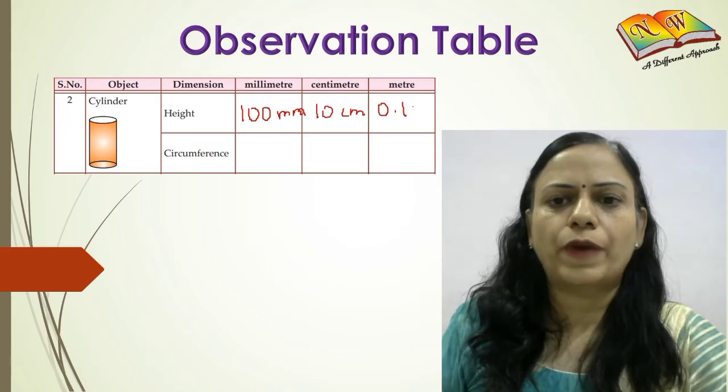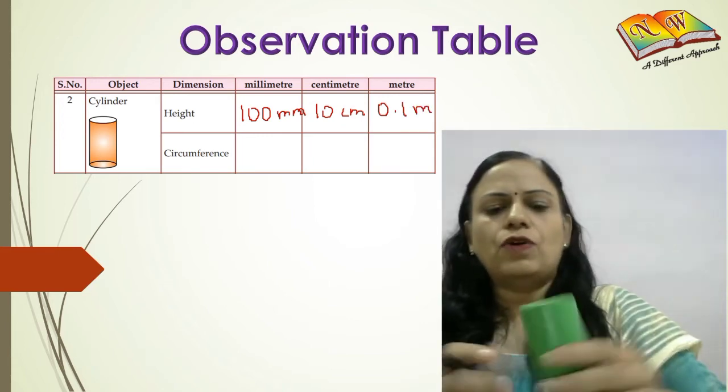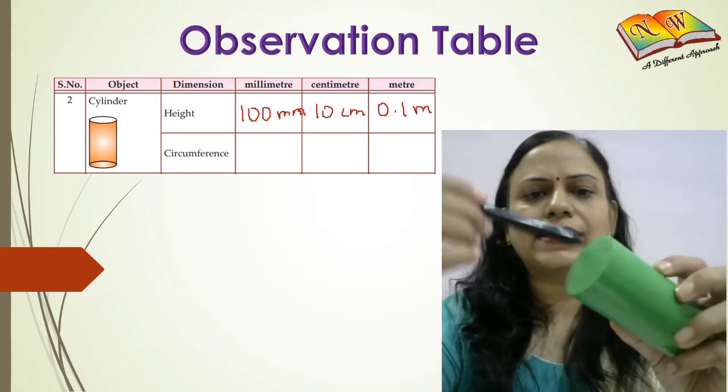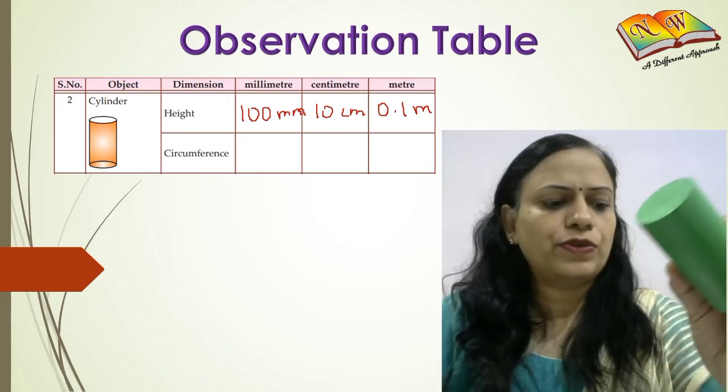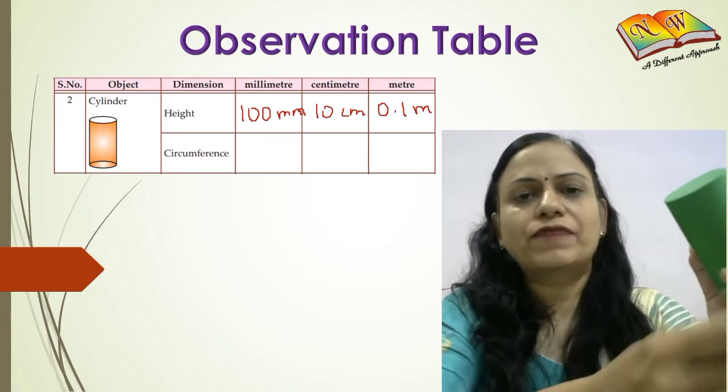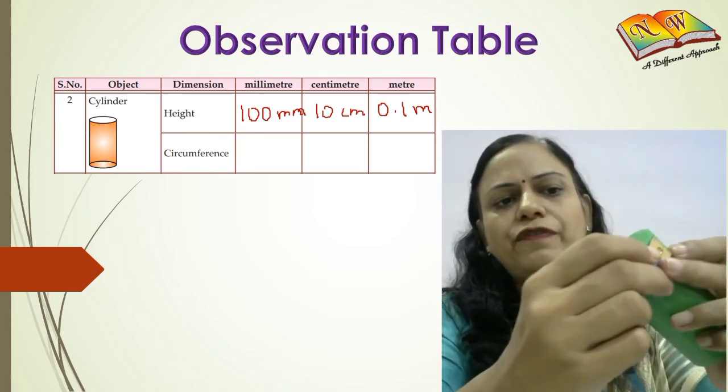Now what is the circumference? Circumference is the circular part, that is this part. You cannot measure it using a scale because obviously it is not straight, so we will have to use a tape here.